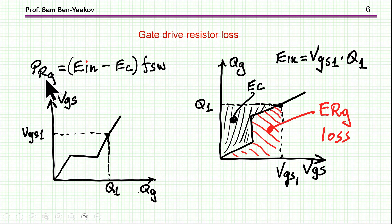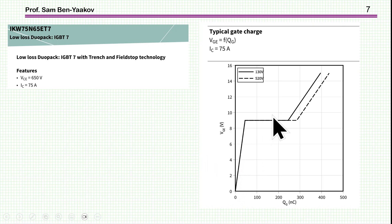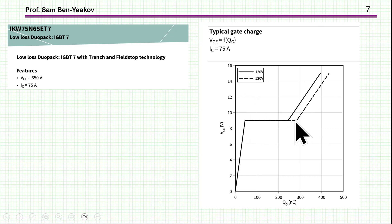The power loss to the resistor equals the input power minus the energy stored in the capacitor times the frequency. Now let's consider a practical case. This is a plot of the voltage and charge for an IGBT, where we see typically an almost linear capacitance region, then the plateau, and then a rise again after the collector voltage reaches near zero. The endpoint of the Miller plateau is dependent on the voltage — the higher the voltage, the longer will be the Miller plateau because the collector voltage swing will be larger.